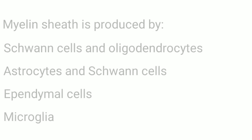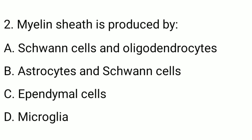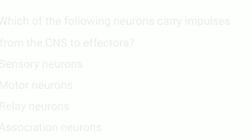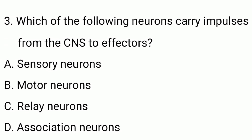Question number two: myelin sheath is produced by? The correct option is option A — Schwann cells and oligodendrocytes.